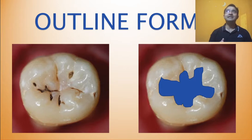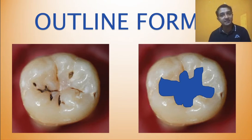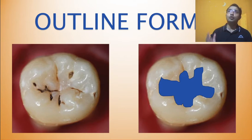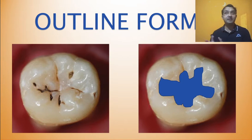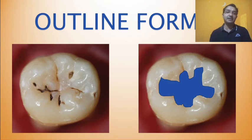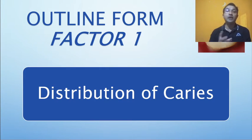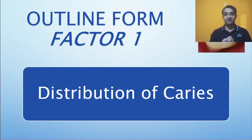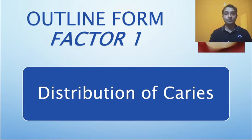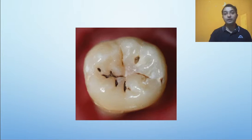Step 1A is the outline form. Many students think that the outline form is what you get after you finish a cavity preparation, but you have to imagine it before starting the cavity preparation. For example, if you are going somewhere, you plan how you will travel there. Similarly, these steps guide you and tell you where you will be at the end of the cavity preparation. The outline is what you see from the top — we are not discussing depth here, just where the cavity should flow.